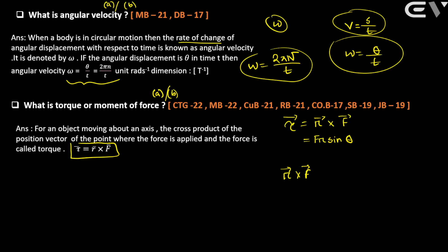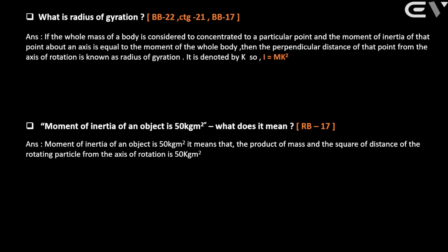Next: what is radius of gyration? Radius of gyration is basically related to the moment of inertia of an object — it represents how the mass is distributed about the axis of rotation.